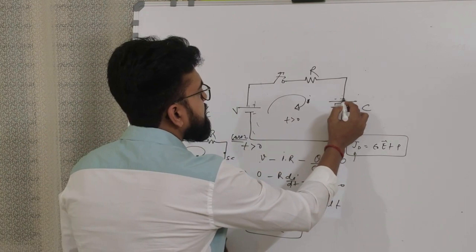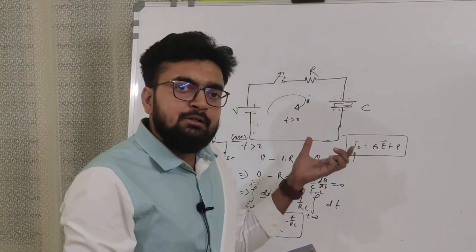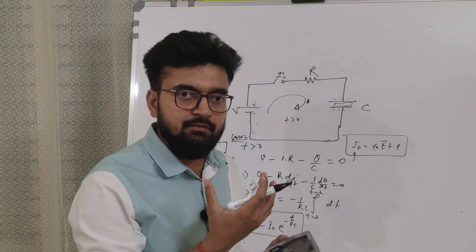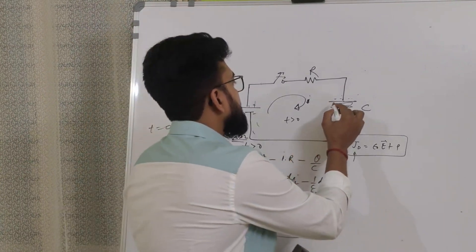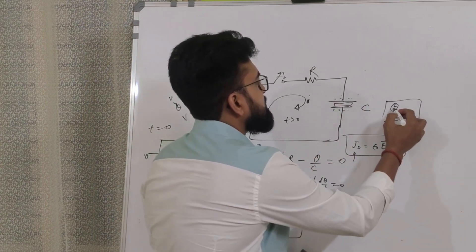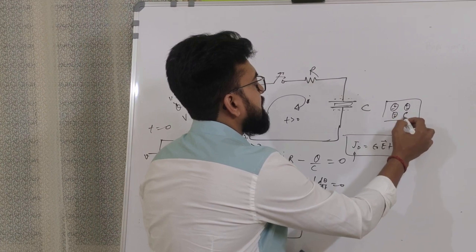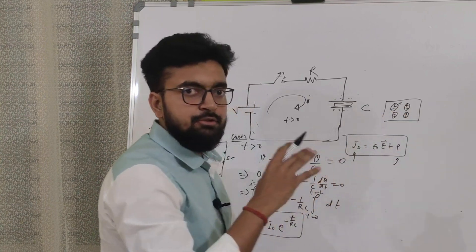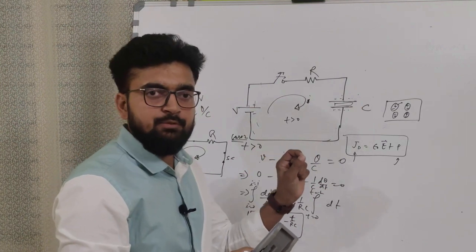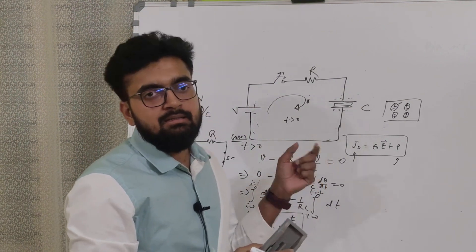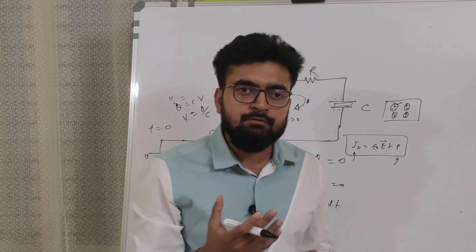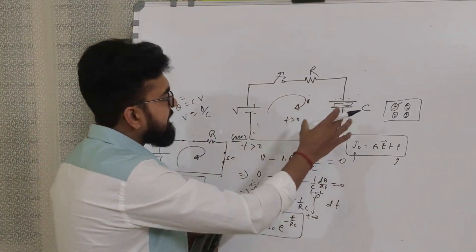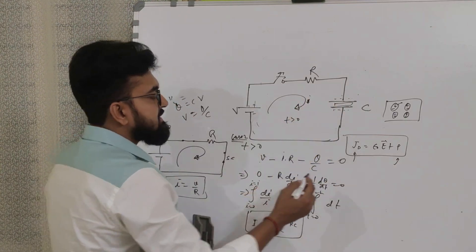As electrons accumulate on the negative plate, the electric flux density keeps increasing. Due to the increase in electric field intensity, the insulator's crystal lattice — which has positive and negative charges tightly packed — undergoes polarization. This lattice polarization causes electrons to displace from their initial positions, constituting a displacement current in the dielectric between the capacitor plates, which leads to current flow through the capacitor.